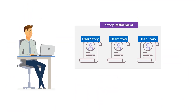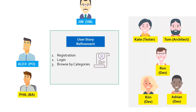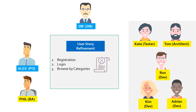Alex then asks Phil, the business analyst, to expand the stories and add supporting documents and acceptance criteria. Jim sets up a refinement session with the scrum team. This is the first type of event. The purpose is to go over the stories for the upcoming sprint and ensure all the details are available; otherwise, details and clarifications can be added by the business analyst or the product owner.